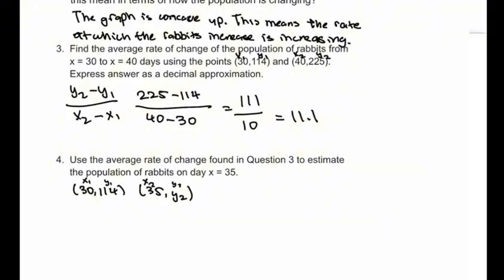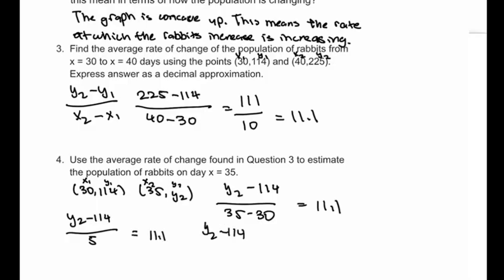And then use the slope formula. y2 minus 114 over 35 minus 30 equals 11.1. And then y2 minus 114 divided by 5 equals 11.1. Then multiply 5 on both sides. y2 minus 114 equals 55.5. And then finally y2 equals 169.5.